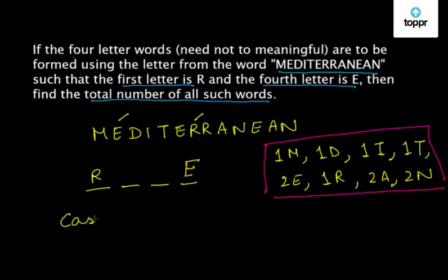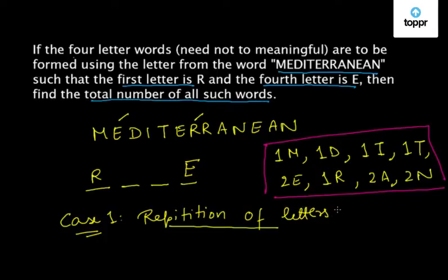Let us take case one, that is repetition of the letters. Now we know that each letter from the given letters can be only used once. This repetition is only possible in three ways if we use E or A or N. This gives us three cases.